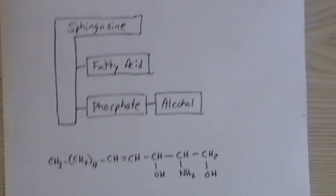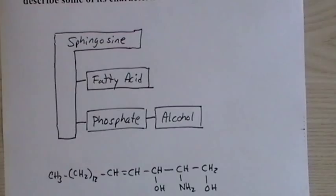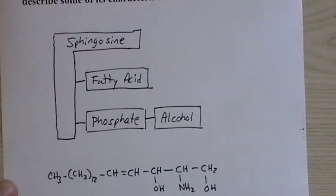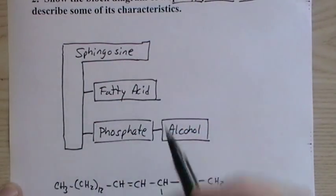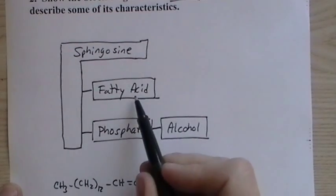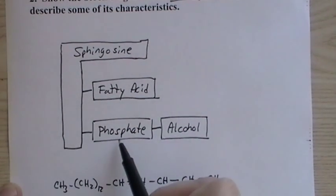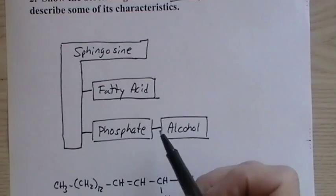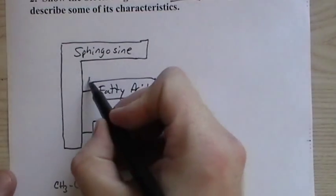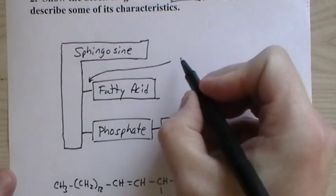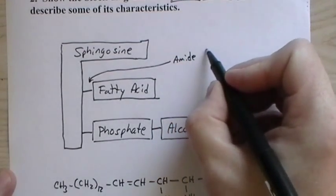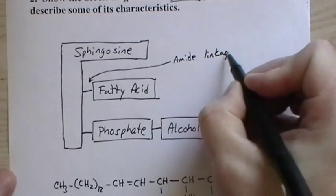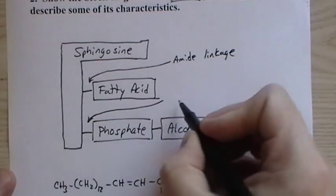This is a little bit different. We have the fatty acid. So we have this platform molecule of the sphingosine, and working off of that is a fatty acid. Then we have the phosphate group, and then we have an alcohol. Now, the thing is, this fatty acid isn't an ester bond, or linkage, it's an amide linkage. And then these are ester linkages.